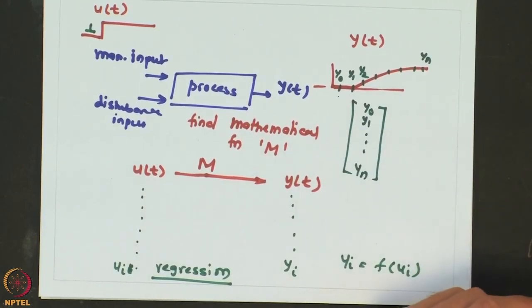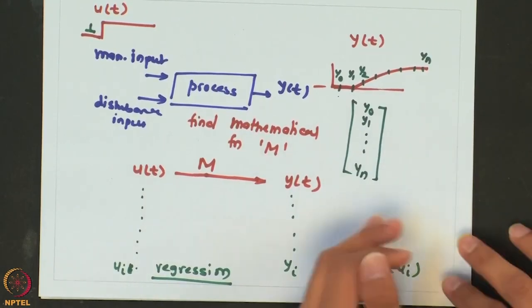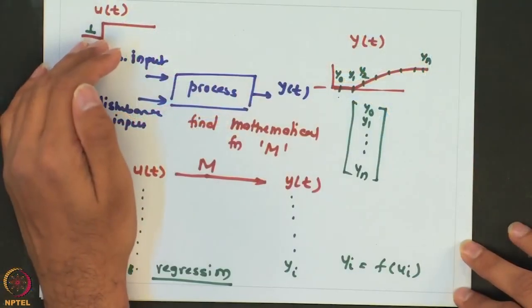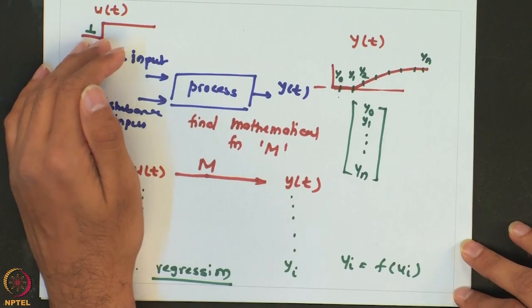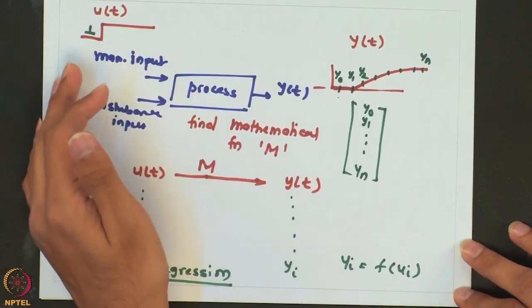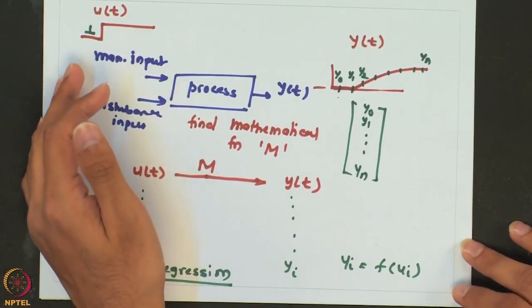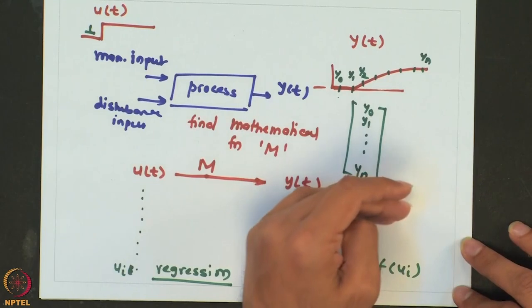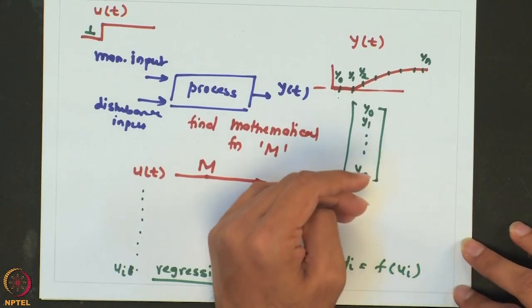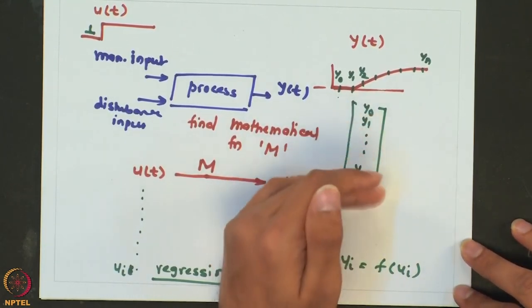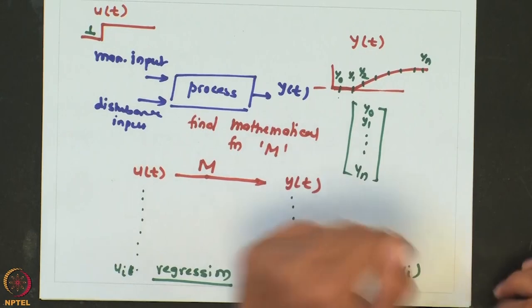In early advanced controllers, step response models were used to capture the response of a process. The idea is that any input given to the process can always be written as a summation of multiple steps, and then assuming the process to be linear, we can just add the responses corresponding to each of the steps.